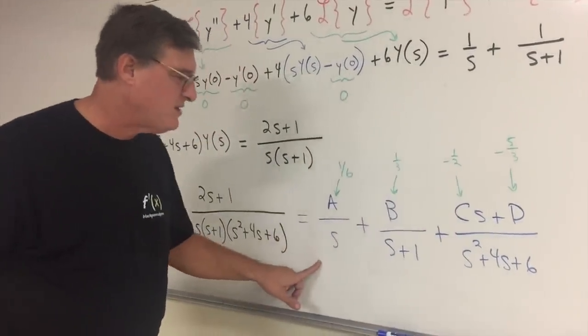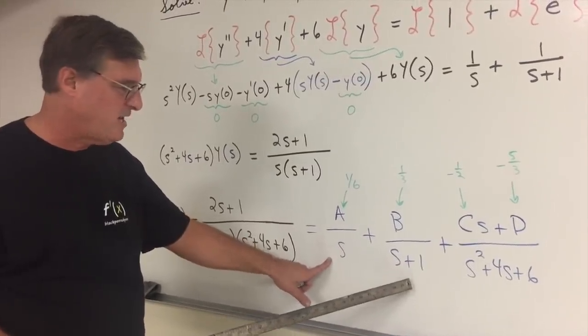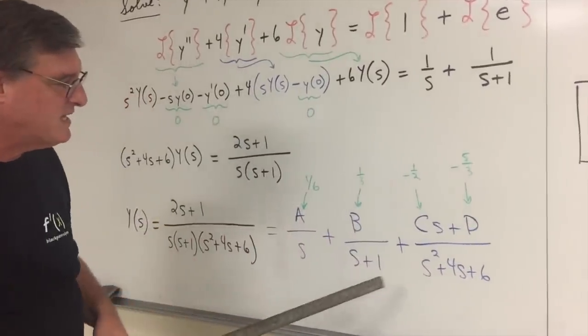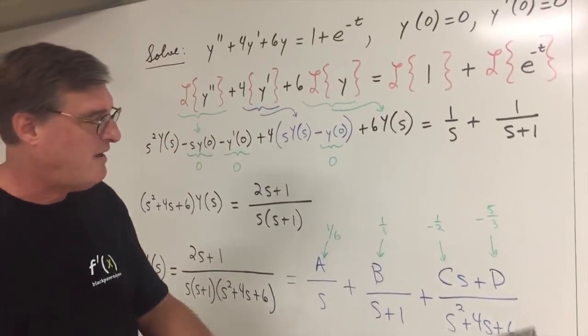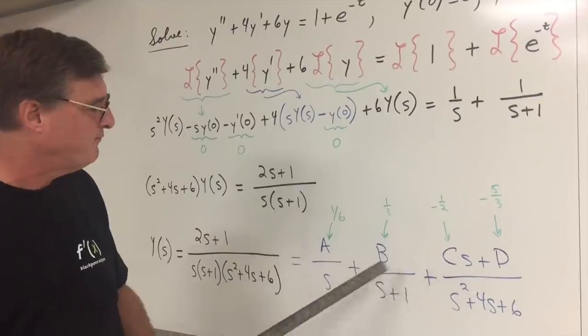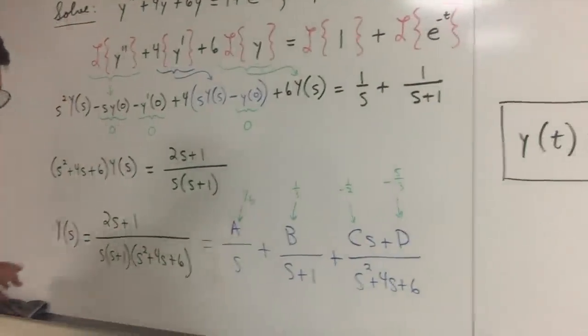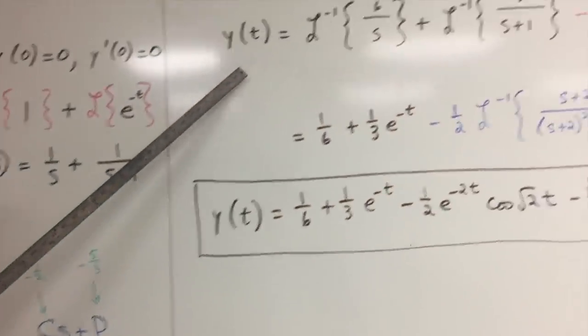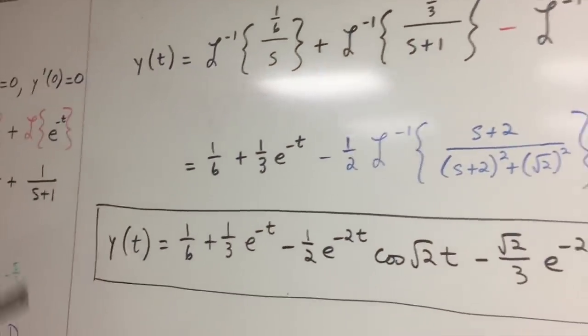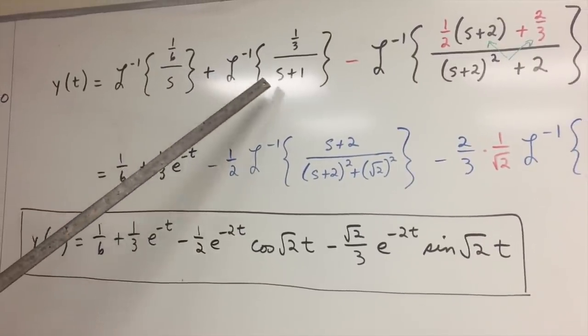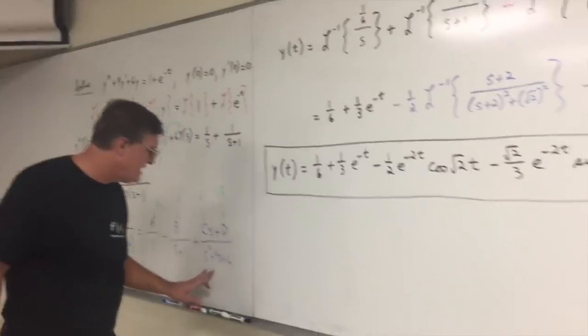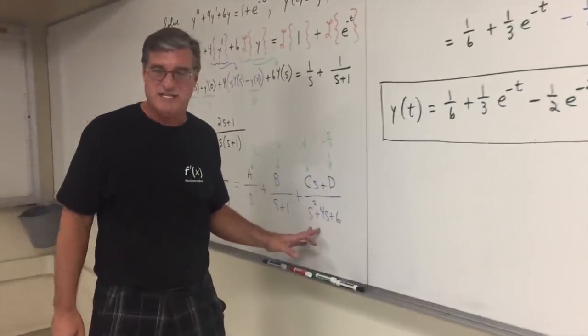I'll let you verify on your own, and if you need practice on this, this is a good one to practice on, to figure out the constants here. But when you do it, you get that a is 1/6, b is 1/3, c is -1/2, and d is -5/3. Now, I'm not too concerned about finding the inverse Laplace transforms of these two fractions because those are nice formulas here. This one, though, you're going to have to do some fixing up on. So anyway, if you take the inverse Laplace transform of capital Y(s), that's just going to be small y(t).